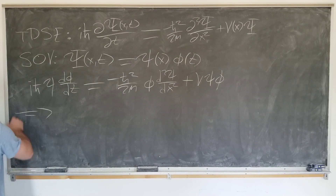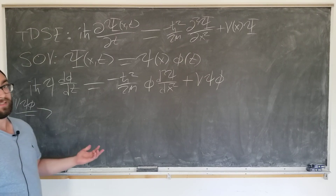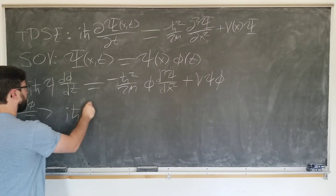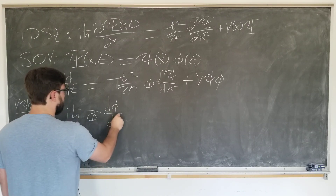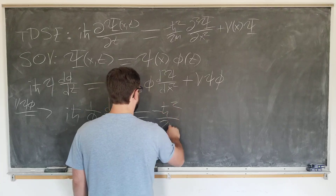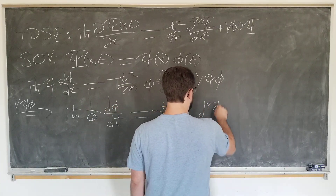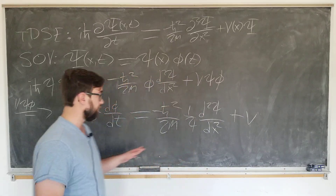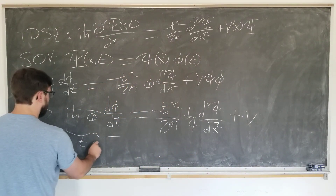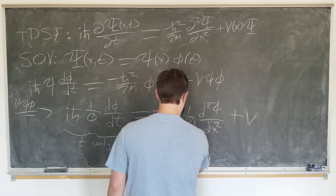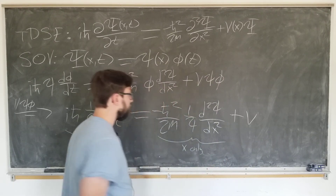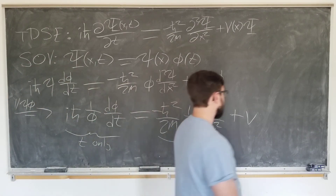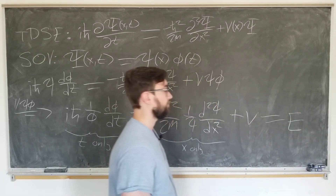Now we're going to use the standard trick and divide by 1 over psi phi. We obtain i h-bar times (1/phi) d-phi/dt equal to minus h-bar squared over 2m times (1/psi) d-squared psi by dx-squared plus V. At this point we note that the left side is a function of t only and the right side is a function of x only. For two different functions of two different variables to be equal, they must both be constant and equal to the same constant, which we'll call E.